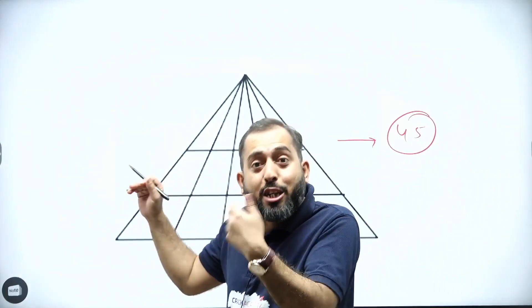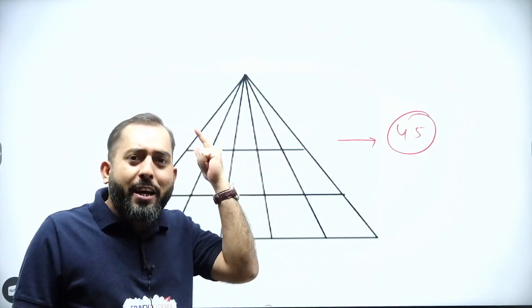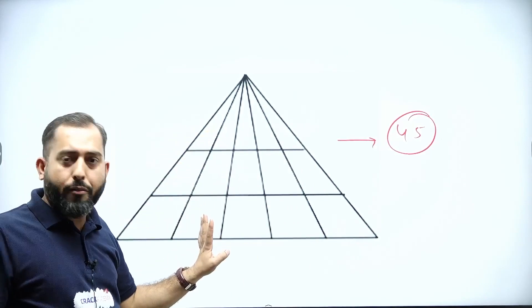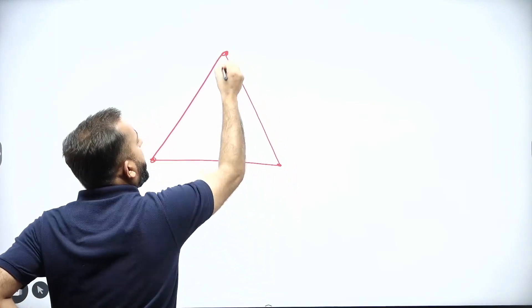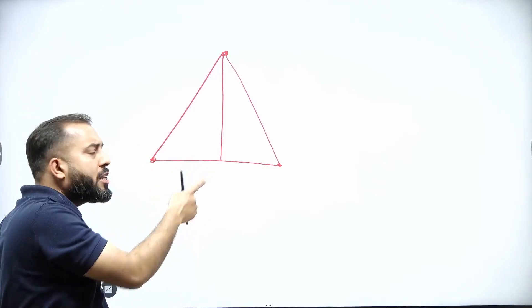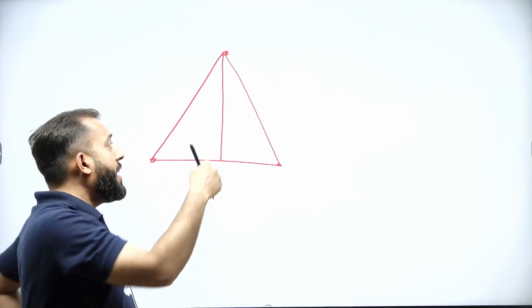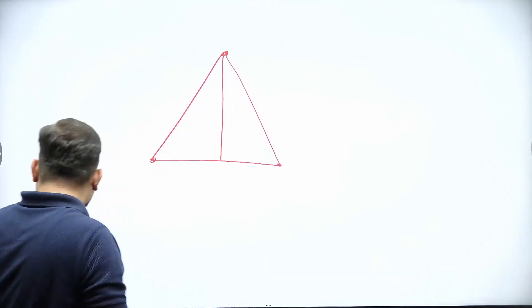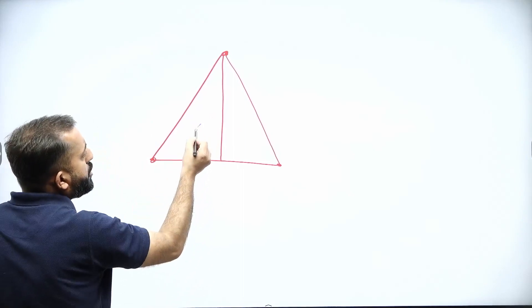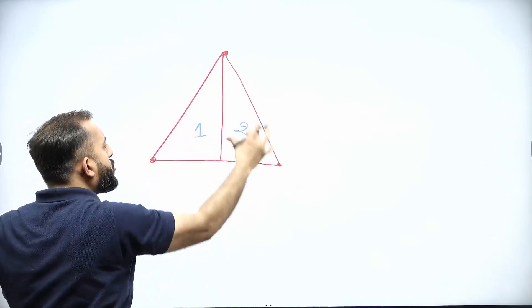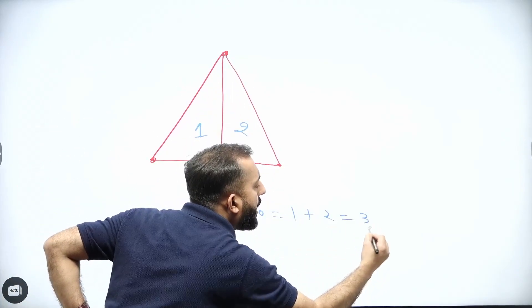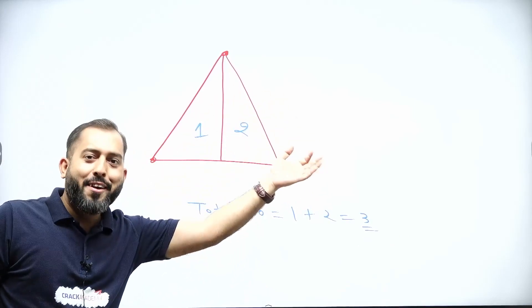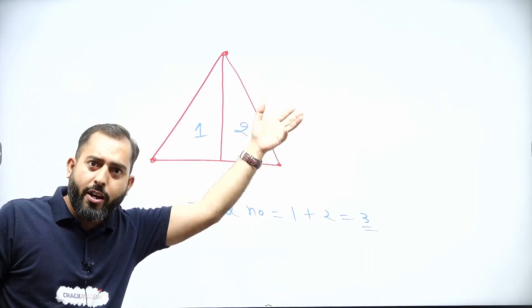Do you have that much time in the examination to count all the triangles individually? No. So let me give you a trick. The secret is: in the shape we already looked at, mark the smallest triangles — this is one, this is two. Total number of triangles is one plus two, which is three. That's the shortcut.